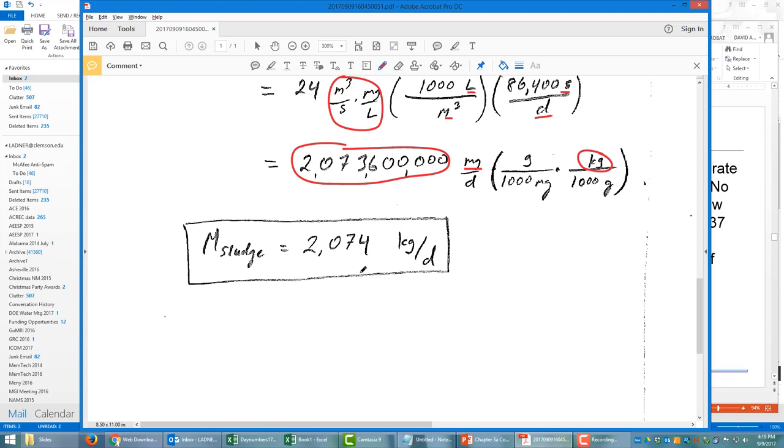And we end up with 2,074 kilograms per day. So that's two metric tons of sludge. This must be a pretty big plant, that's a lot of sludge, or this is a lot of solids. This is just the solids, not the water mass leaving the system.